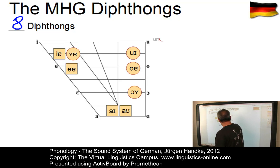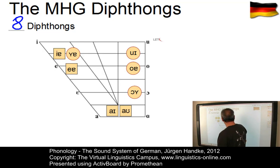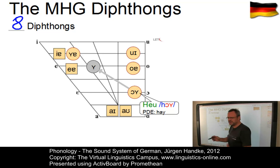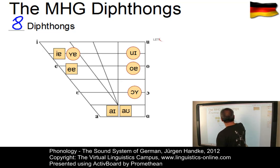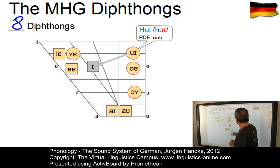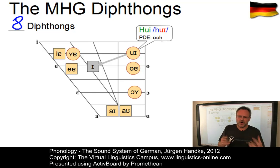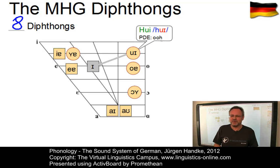Let us now look at the up-gliding diphthongs. There is ai as in Hai, au as in Haus — a back up-gliding diphthong — and then oi as in hoi, where the offset is rounded but could also be treated as unrounded, so there is a lot of variation involved. Last but not least we have ui as in hui or pfui. The sample words are primarily interjections. The offset is a little bit lower or level with the onset, so it's not really up-gliding — maybe it's a sort of fronting diphthong.